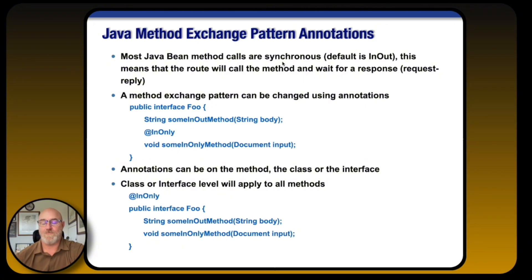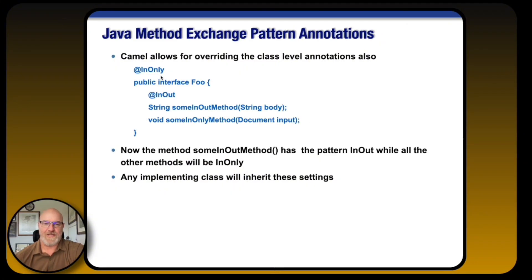Just like other portions of the exchange, the message exchange pattern has annotations. You can specify an in-only annotation on a specific method within a bean, or an in-out annotation on a specific method. Even though you might have a class-level annotation, you can override it at the method level — giving you even more options. Thank you for following along. If you found this useful, feel free to like and subscribe. We look forward to seeing you again on another episode.